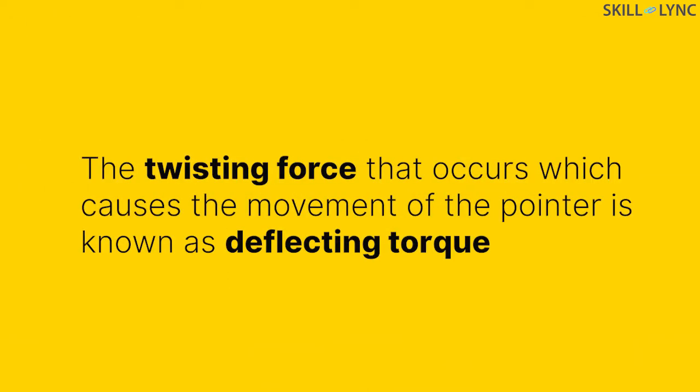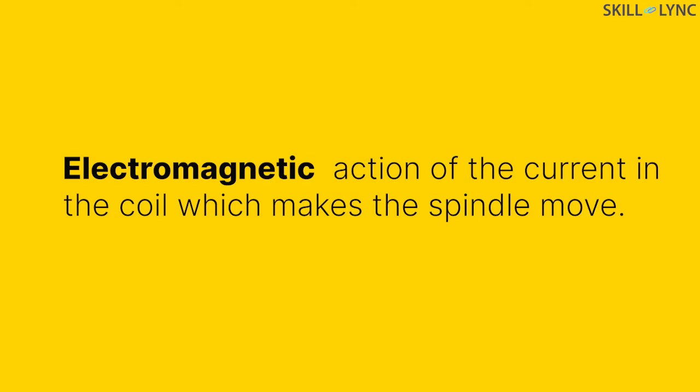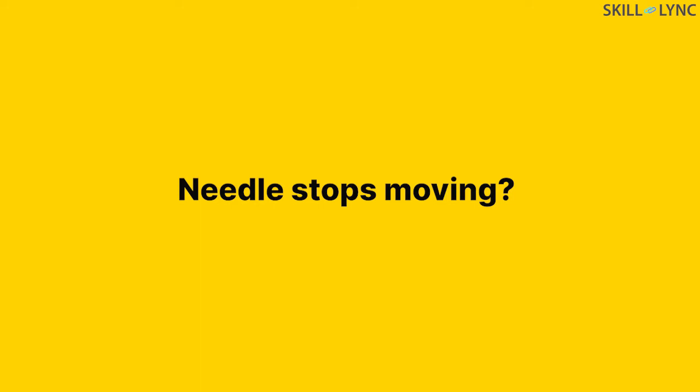The twisting force that occurs which causes the movement of the pointer is known as deflecting torque. It is produced by electromagnetic action of the current in the coil which makes the spindle move.